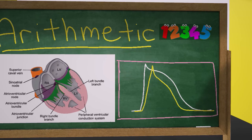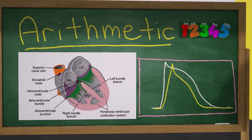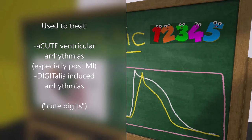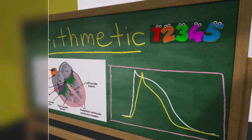Now what are they used for clinically? Well, they don't really cause changes to the ECG. They're actually only used in cases of acute ventricular arrhythmias, especially post-myocardial infarction and digitalis-induced arrhythmias. That's why if you take a look over here, the teacher loves these cute digits - cute for acute ventricular arrhythmias and digits for digitalis-induced arrhythmias. So again, the Class 1B's are best for post-myocardial infarction and in the case of digitalis-induced arrhythmias.